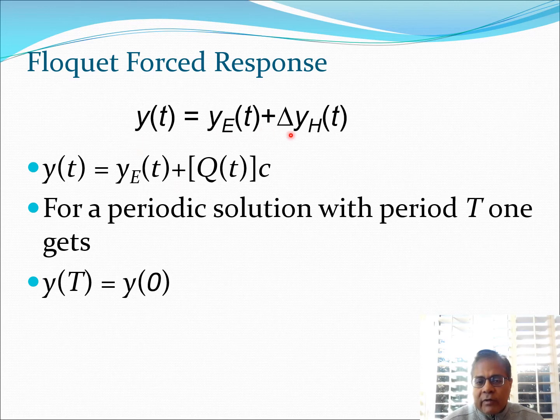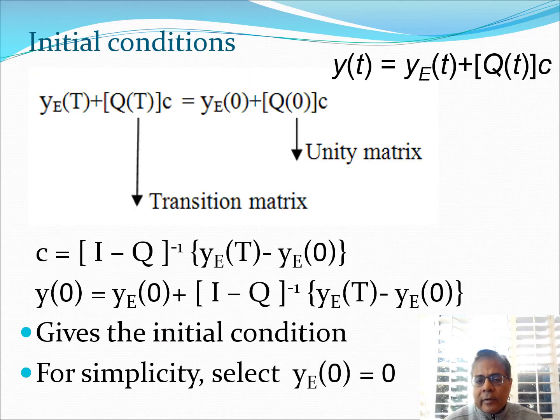Now let's go back to our general equation y(t) is y_E(t) plus delta y_H(t), but now I have calculated the expression for delta y_H(t), so I can write y(t) is y_E(t) plus Q(t) into c. For a periodic solution with period T one gets this because this will naturally hold. Remember the system is periodic, so the value of y at the end of the time period is going to be the same as the value of y at 0. I can write this equation where all I have done is taken the general equation and substituted t equals capital T on one side and t equals 0 on the second side.